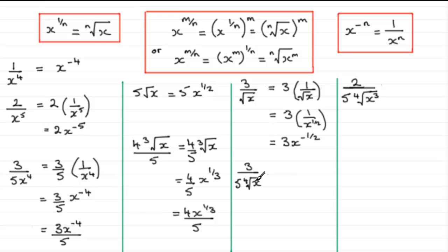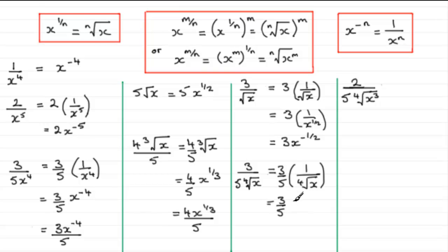Next example: 3 all divided by 5 multiplied by the fourth root of x. We see this as 3 fifths multiplied by 1 over the fourth root of x. The fourth root of x, where n is 4, gives us x to the power 1 over 4. So we have 3 fifths multiplied by 1 over x to the power 1 quarter. Using the negative exponent rule, 1 over x to the power 1 quarter becomes x to the power minus 1 quarter. So we end up with 3 fifths times x to the power minus 1 quarter, or equivalently 3x to the minus 1 quarter all over 5.